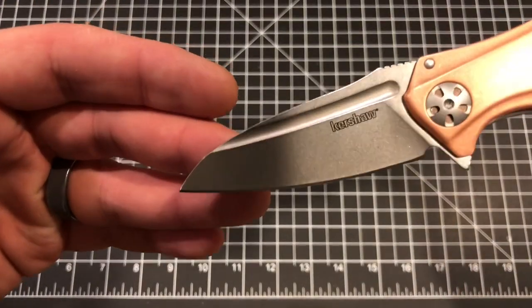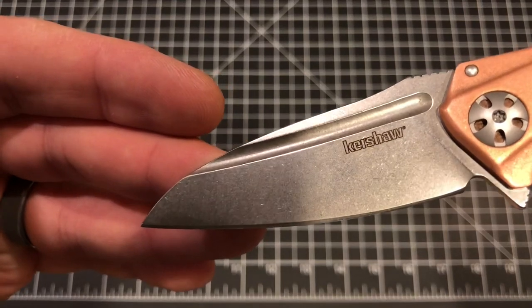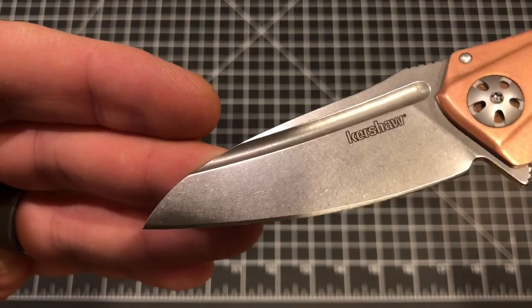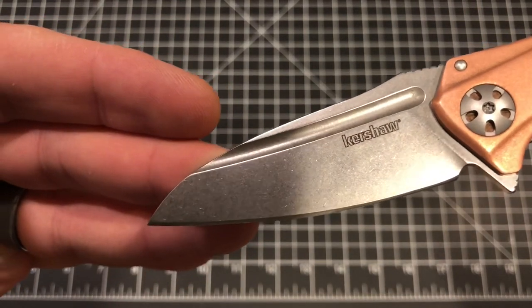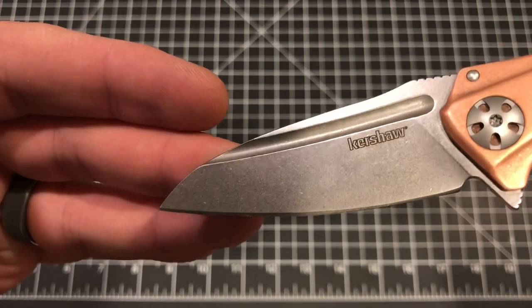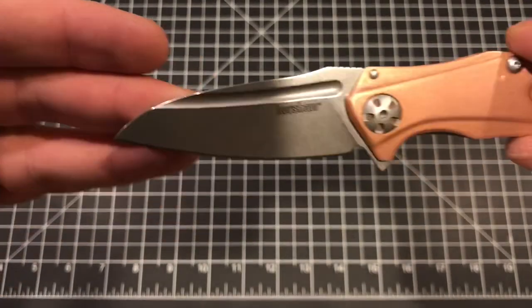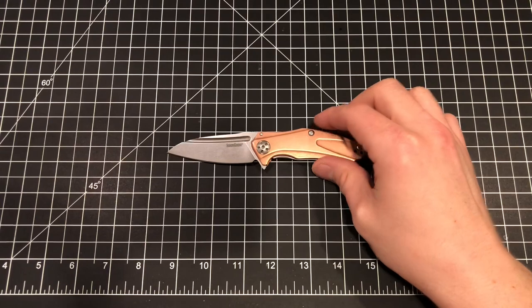It's a really fine stonewash. A lot of times you see a really coarse stonewash, which can look good on certain knives, but I do like this kind of fine grained stonewash that they did on the blade there. So I think that is a very attractive looking blade.